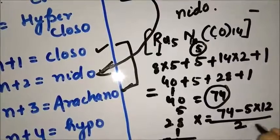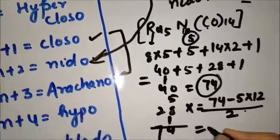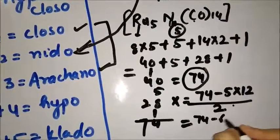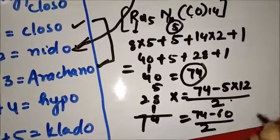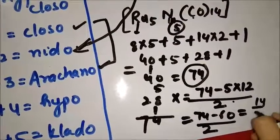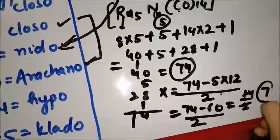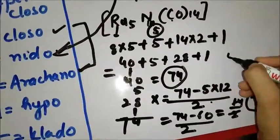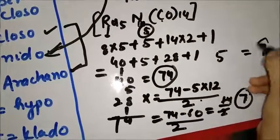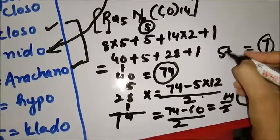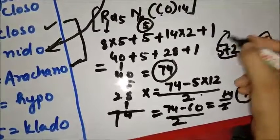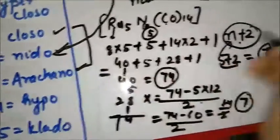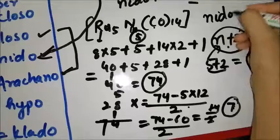Next, calculate x: 74 − n × 12 / 2, where n is 5. That is 74 − 60 / 2 = 14 / 2, and x comes out to be 7. Then compare this with the number of metals: number of metals are 5 and x is 7, so we add 2. In place of 5, put n + 2. So n + 2 again gives the structure nido. The structure for this compound is nido.